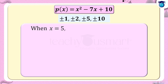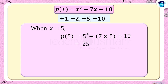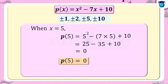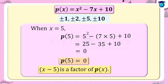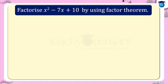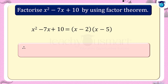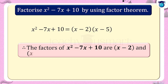When x equals 5: p(5) equals 5 squared minus 7 times 5 plus 10, equals 25 minus 35 plus 10, equals 0. Therefore by the factor theorem, x minus 5 is also a factor of p(x). That is, x squared minus 7x plus 10 equals (x minus 2) multiplied by (x minus 5). Therefore the factors of x squared minus 7x plus 10 are (x minus 2) and (x minus 5).